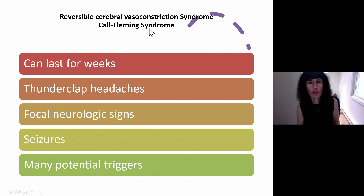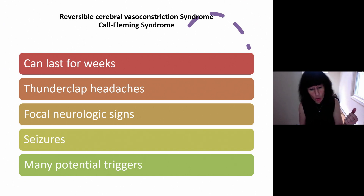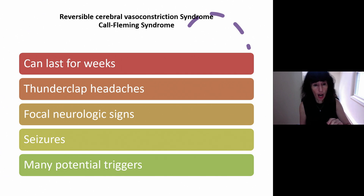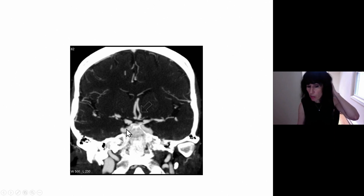Call-Fleming syndrome is reversible cerebral vasoconstriction syndrome. It causes a headache that can last for weeks, can cause thunderclap headaches, focal neurologic signs, can look for all the world like a stroke, and can cause seizures. There are a lot of triggers — the most recent case I saw was triggered by marijuana, and a case before that was likely an SSRI. Think about it when you've got somebody with a headache lasting for weeks, multiple thunderclap headaches, and focal neurologic signs. You can see the spasm and narrowing in the artery. You want to do arterial imaging — MR angiogram or preferably CT angiogram.